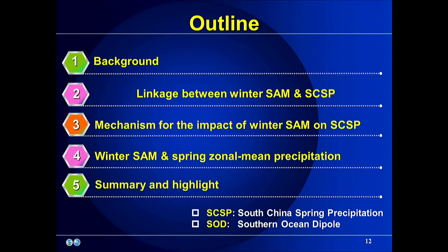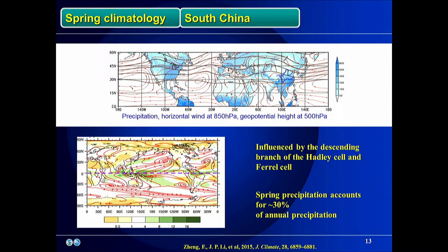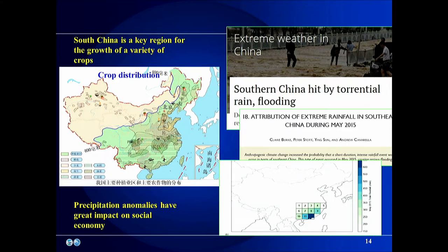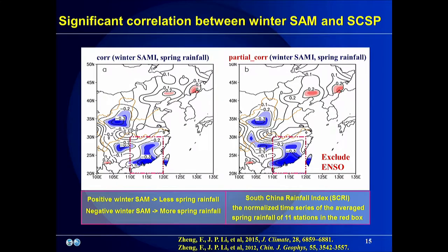Moving to the linkage between the boreal winter SAM and spring rainfall — a bit about climatology. South China is located in the Northern Hemisphere subtropics, influenced by the descending branch of the Hadley cell and the Ferrel cell. Spring precipitation over South China accounts for about 30% of annual precipitation, and precipitation anomalies have great impact on the social economy. This figure shows the correlation between the boreal winter SAM and spring rainfall. South China is a region with significant negative correlation — a positive winter SAM is usually followed by lighter spring rainfall.